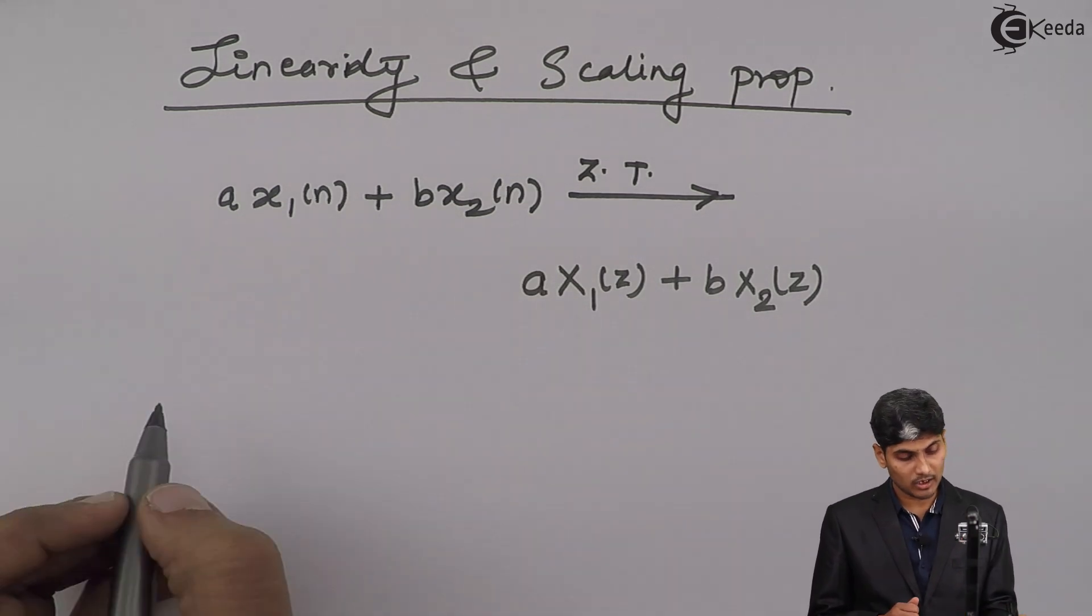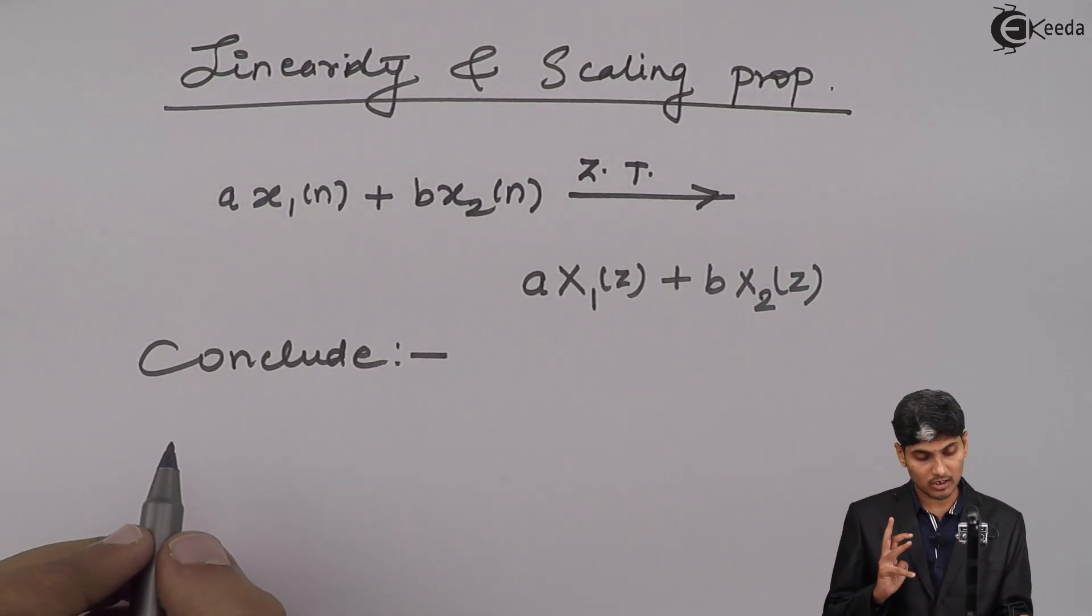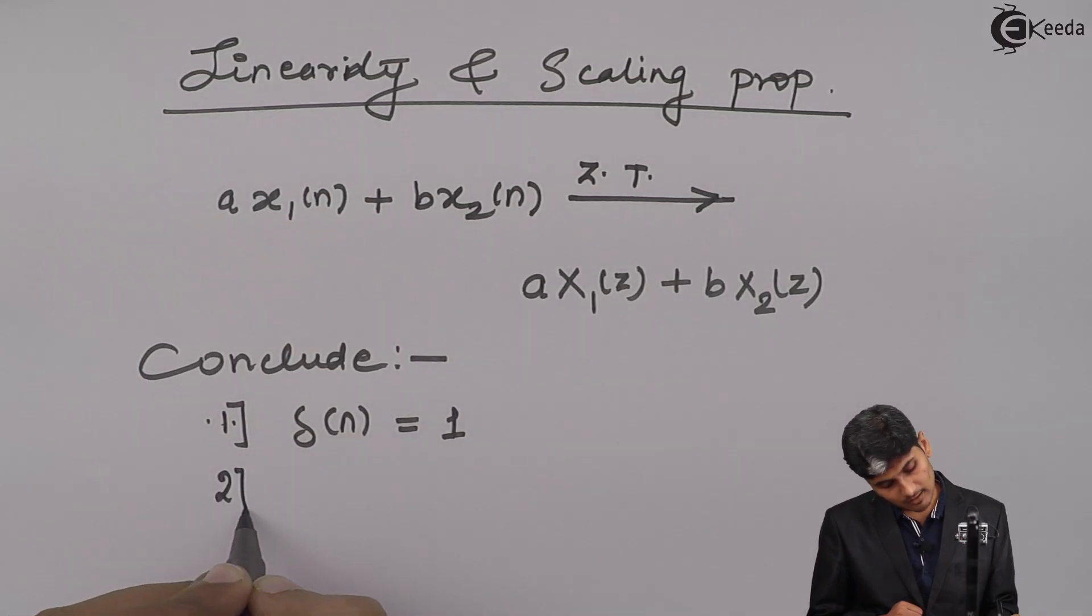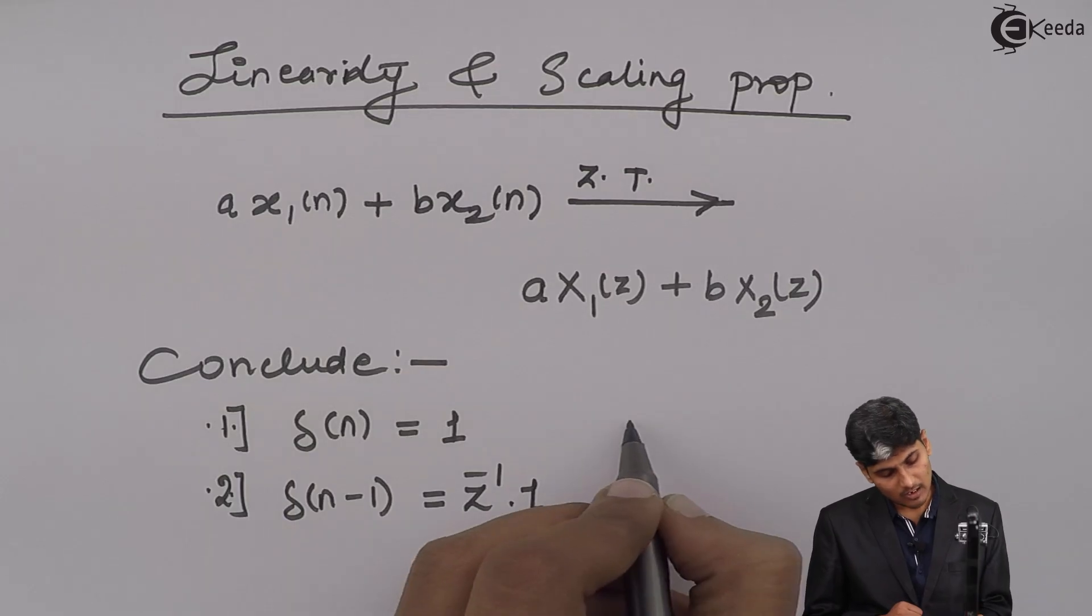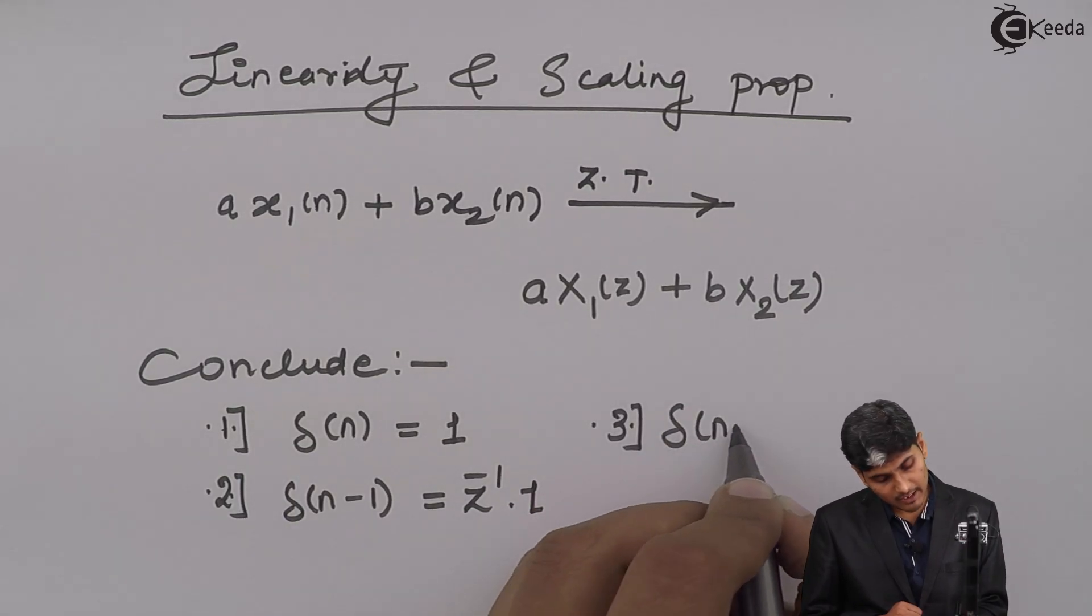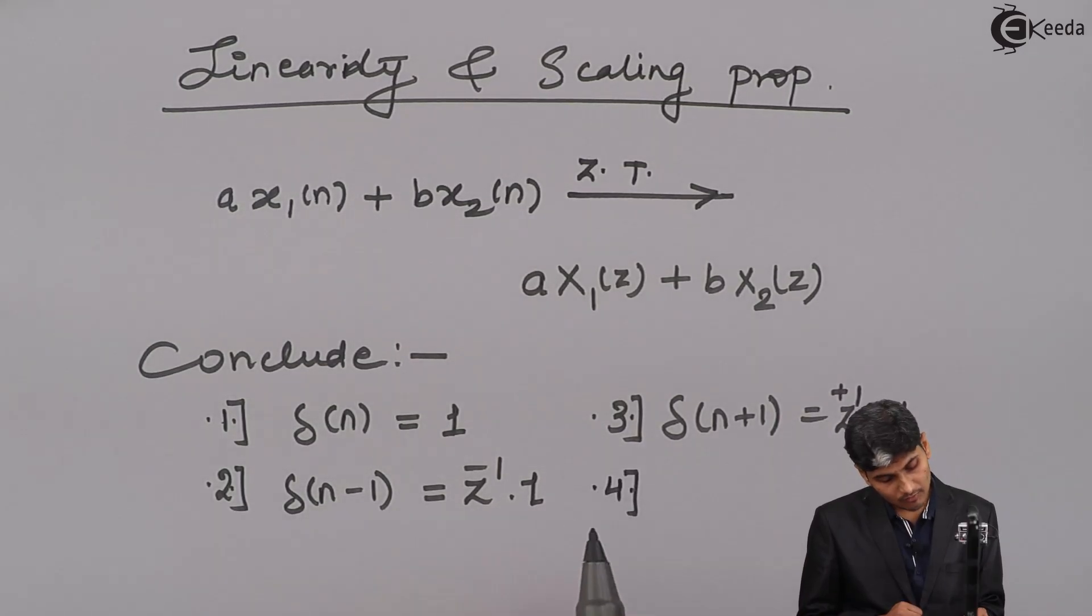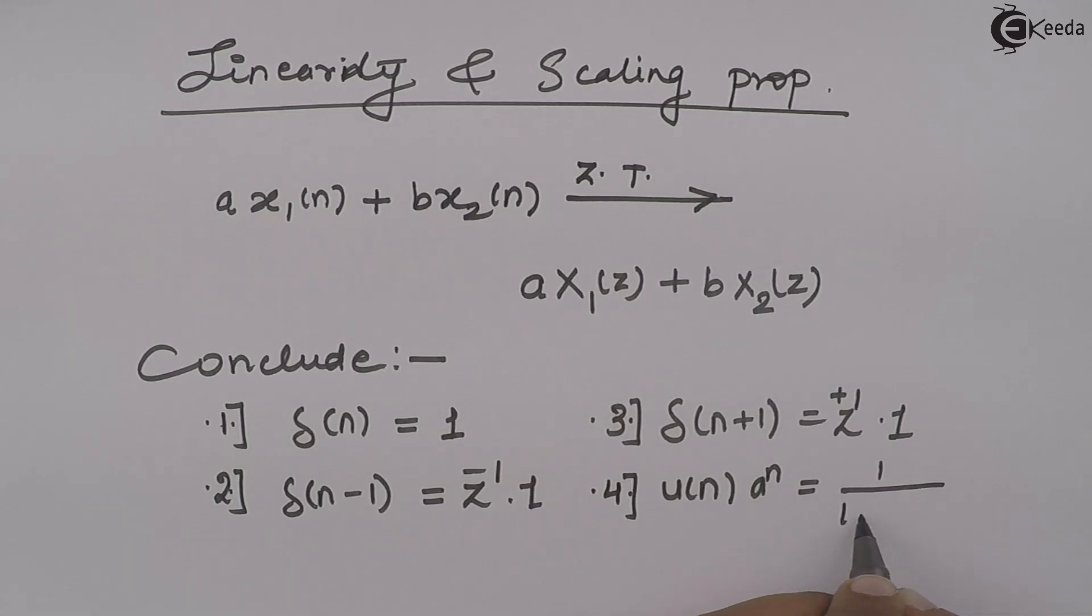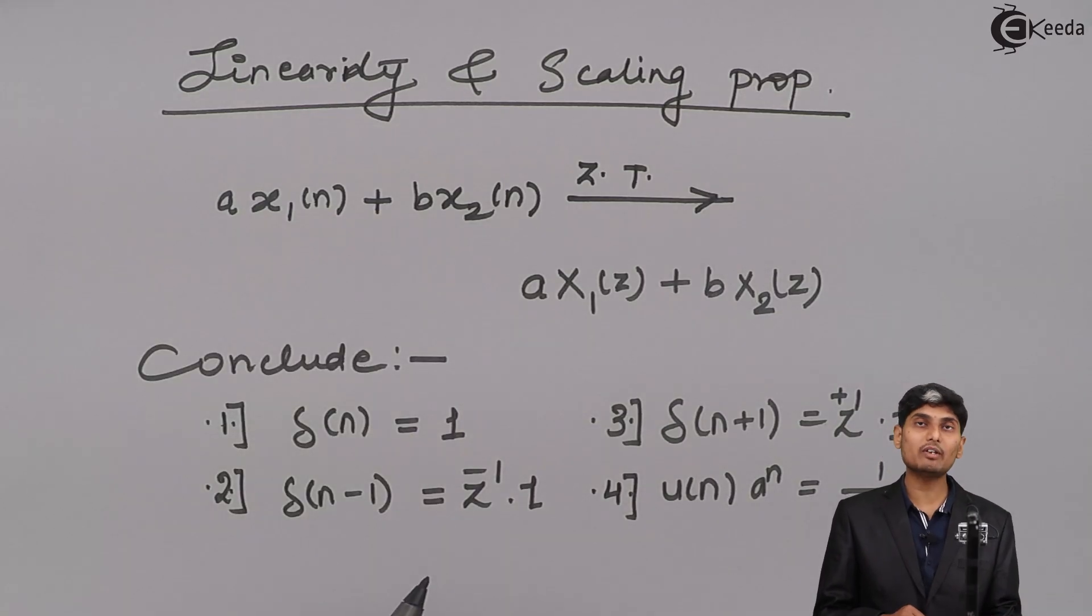To conclude, from Z transform we will be using three basic formulas: one is delta(n) equals 1, second is delta(n-1) is z^(-1), then we have delta(n+1) which is z^(+1), then we have U(n) with A^n multiplied which will give 1/(1-Az^(-1)). These are the basic four, along with the linearity property, which will be used very often in this chapter. Thank you.